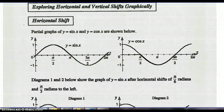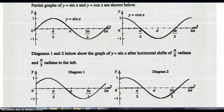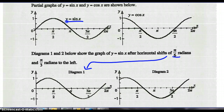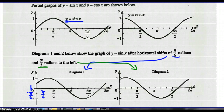You've got a partial graph of sine x and cosine x. Diagrams 1 and 2 below show the graph of sine x after it's been shifted pi over 6 radians and pi over 3 radians to the left. Right up above here is sine x. If I shift it pi over 6 units to the left, I get the graph in diagram 1.